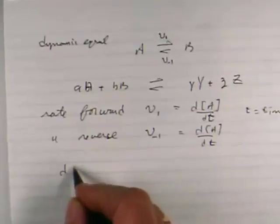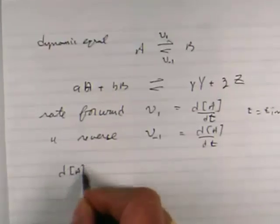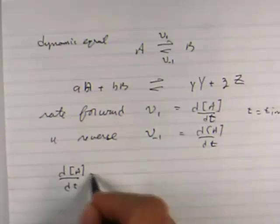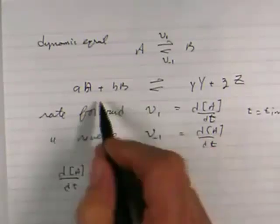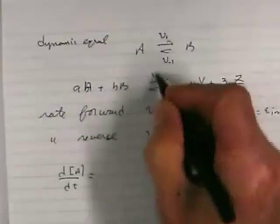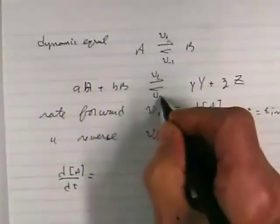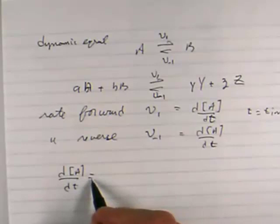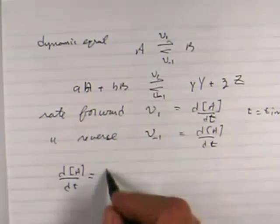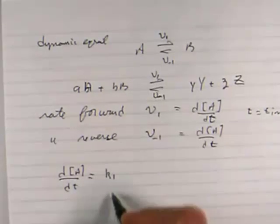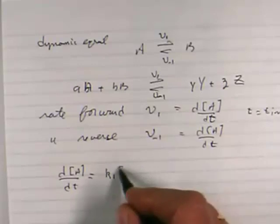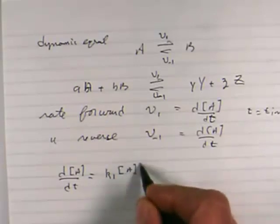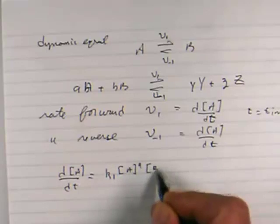So what I have then is the rate of change of A, and I just want to write it like this. If I look at this reaction and it's going V1 and V minus 1, then V1 is going to lose a certain amount. It has a rate constant, and we write that as the concentration of A and the concentration of B.